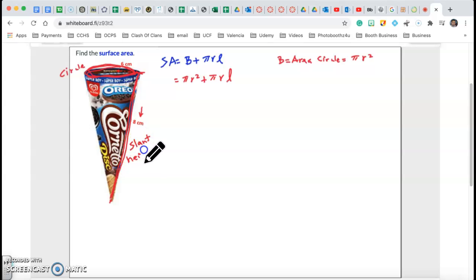Now in our case, that slant height is equal to 8 cm. My radius is not that really clear, but this is your radius. That 6 is showing you the radius. Okay, so I have my l, I have my radius. Plug it in.